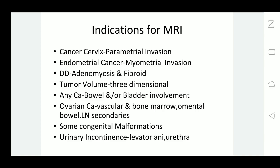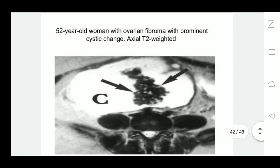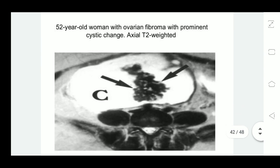Congenital malformations can also be identified by MRI. In patients with urinary incontinence planned for conservative surgery, MRI can assess the strength of the levator ani and the urethral angle. These are MRI images — this is a picture of ovarian fibroma in a 52-year-old woman with prominent cystic changes.